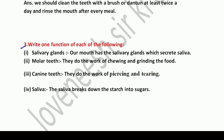Question number three: Write one function of each of the following. Salivary glands — our mouth has salivary glands which secrete saliva; their function is to continuously produce saliva. Molar teeth — they do the work of chewing and grinding the food. Canine teeth — they do the work of piercing and tearing. Saliva — the saliva breaks down the starch into sugars; it converts the starch present in our food into sugar. That's all for this worksheet.